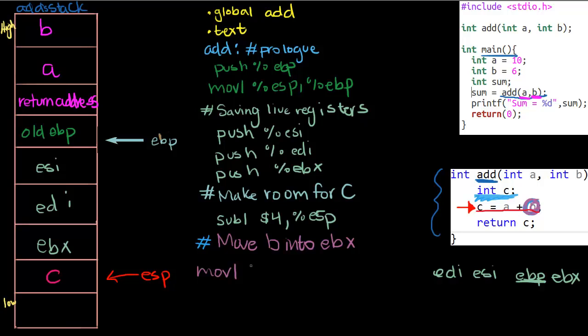We know that B is, each one of these is 4 bytes, so 4, 8, 12. B is 12 bytes above EBP. We'll write this line of code: 12 past EBP, basically saying we start at the memory address EBP and we move up 12 bytes. Right now we're accessing that value and we're gonna move that into EBX.